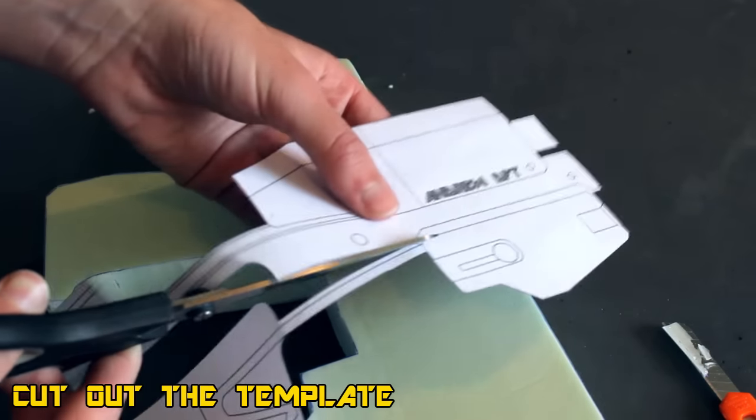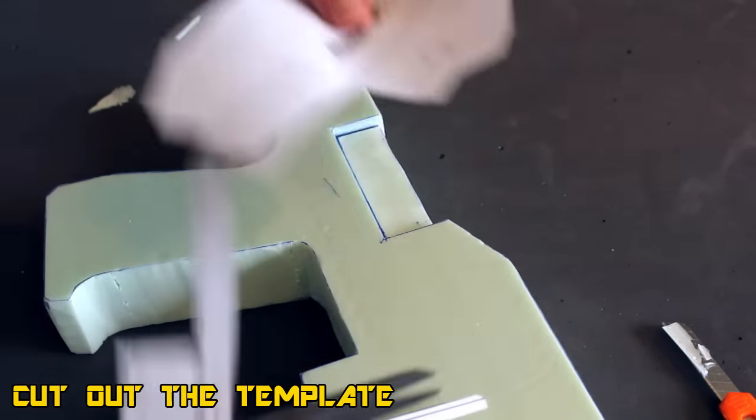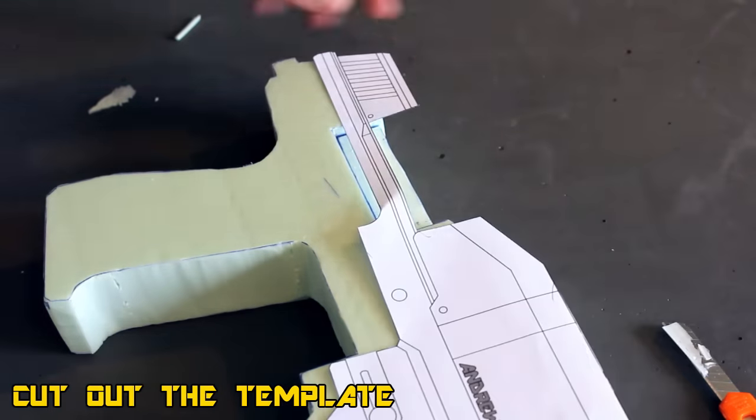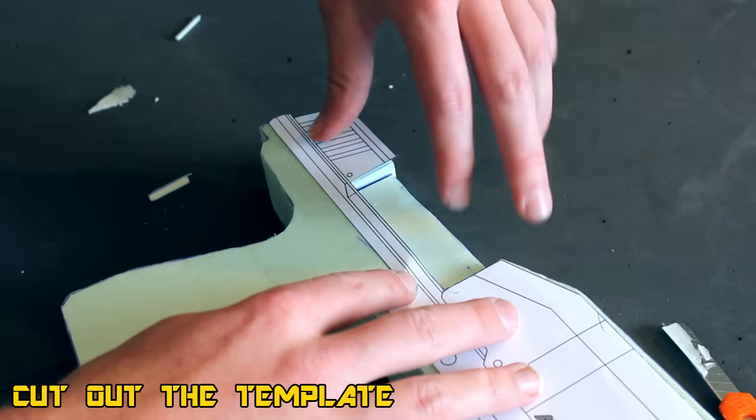The reason being is you can always add levels to the height, but you want to get your depth nailed pretty early on. That way you know and get a general idea of how thick your prop is actually going to be in the end.